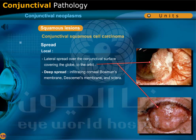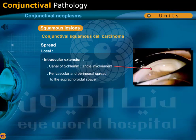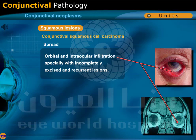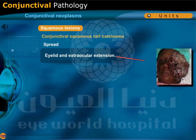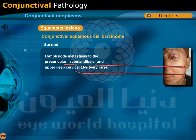Spread of invasive squamous cell carcinoma includes local spread — lateral spread over the conjunctival surface, covering the globe to the orbit; and deep spread — infiltrating corneal Bowman's membrane, Descemet's membrane, and sclera. Intraocular extension occurs via the canal of Schlemm, angle involvement, and perivascular and perineural spread to the suprachoroidal space. Orbital and intraocular infiltration occurs especially with incompletely excised and recurrent lesions. Lymph node metastasis to preauricular, submandibular, and upper deep cervical lymph nodes is very rare.